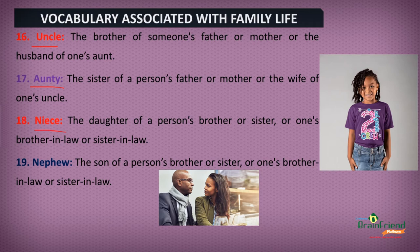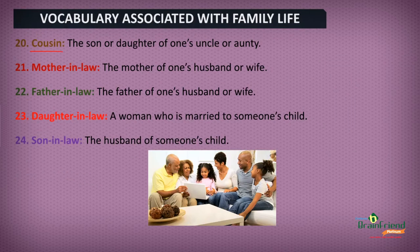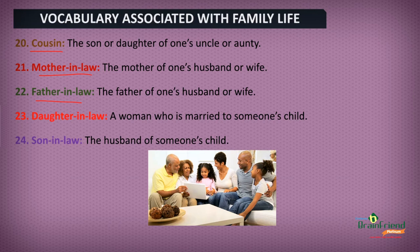Next, we have Niece — the daughter of a person's brother or sister or one's brother-in-law or sister-in-law. While the Nephew is the son of a person's brother or sister or one's brother-in-law or sister-in-law. Next, we have Cousin — the son or daughter of one's uncle or auntie. Also, we have Mother-in-law — the mother of one's husband or wife. Next, we have Father-in-law — the father of one's husband or wife. Also, we have Daughter-in-law — a woman who is married to someone's child. And lastly, Son-in-law — the husband of someone's child.